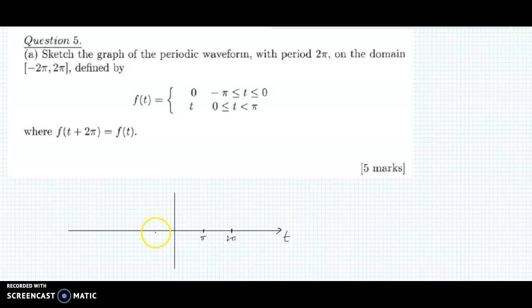And similar kind of distance out this side: minus π, minus 2π. And we could add in 3π just to be more complete maybe. And this axis here then is going to be f of t.